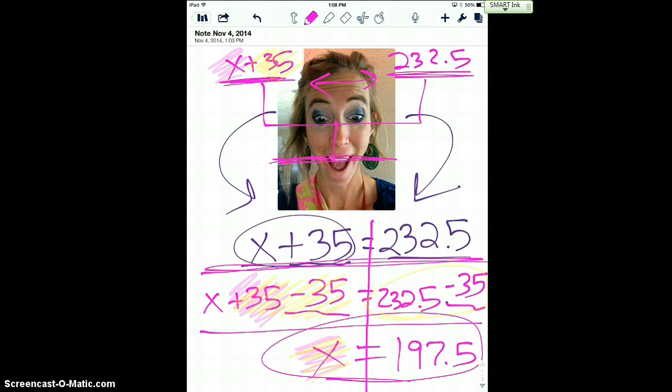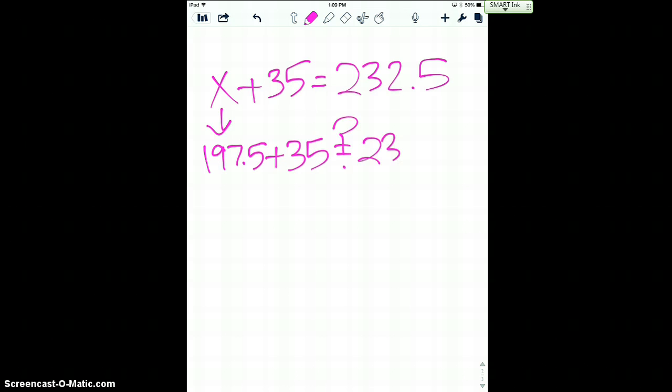And there is how we get our solution when we are using algebra. And the last part that we discussed in class was checking it. So now if we actually check to see if this works, what do we have to do? We have to rewrite the equation. x plus 35 equals 232.5. I'm gonna plug in for x what I got, the solution, 197.5. And I'm gonna add 35. And I'm gonna see, is that 232.5?